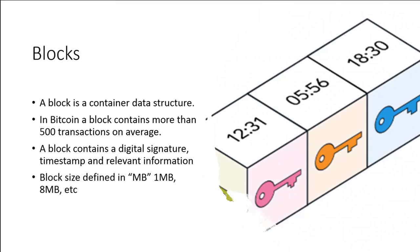A block is essentially a container data structure. In Bitcoin, a block can contain up to 500 transactions on average. It's going to have a digital signature, a timestamp, and relative information. There's also a term around the block size, and this has always been a challenge with Bitcoin and other forks of Bitcoin such as Litecoin — about how big or when or why they should increase the block size.